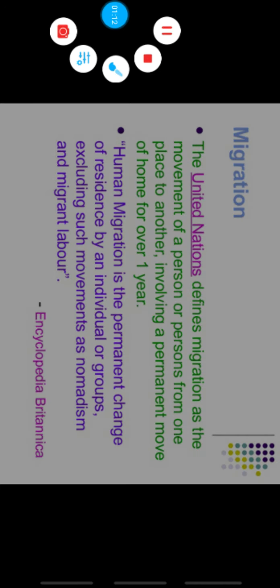So first we will discuss the definition of migration. The United Nations has given one definition: movement of a person or persons from one place to another involving a permanent move of one home for over one year. They are saying people move from one place to another place — maybe permanently, or for one year, two years, or less than one year. That is called migration.